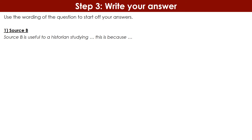'Source B is useful to a historian studying...' — then insert the focus of the question, in this instance the Gestapo between 1933 and 1939 — '...because...' and this is where you make your inference. Once you've made your inference, back it up with a quote to show the examiner it's not a lucky guess. 'Support in the source for this is...' — include the quote in quotation marks — then 'This shows that...' and expand on what your quote is telling you, developing your analysis of that inference.